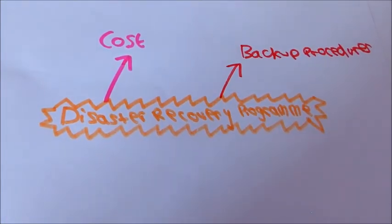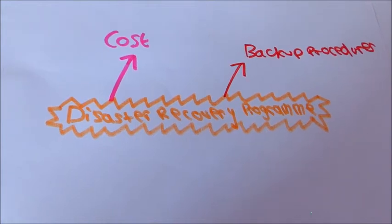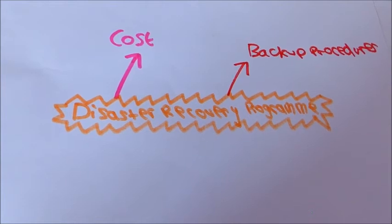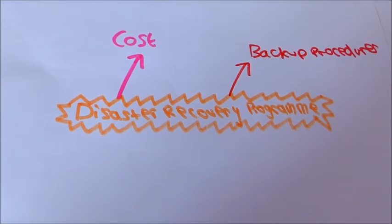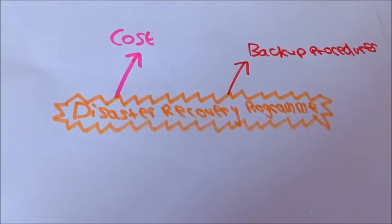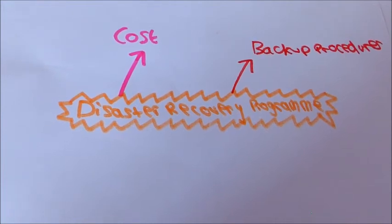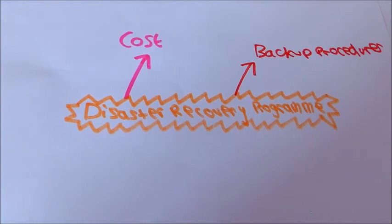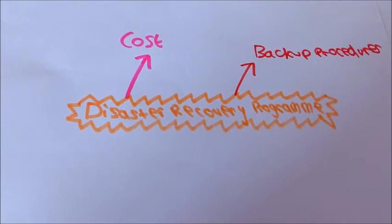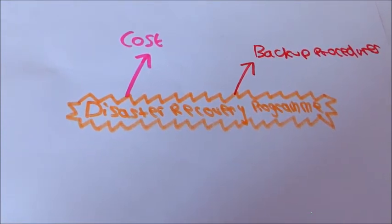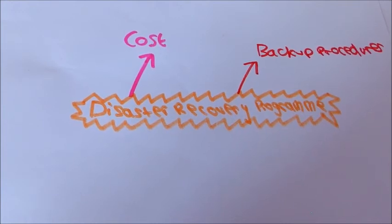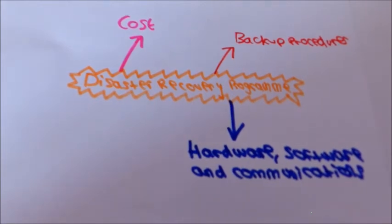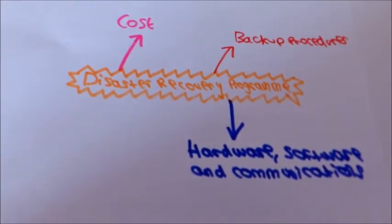They need to decide on the backup method, for example a tape or a disc. And this will depend on how much the organisation is willing to spend and how fast they want the backup procedure to work. The organisation also needs to decide how often backups are made. Backups should be made regularly so that if the system does crash then they can go back to their last backup and carry on from there. The organisation needs to consider the partial or total loss of computing equipment, telecommunications,